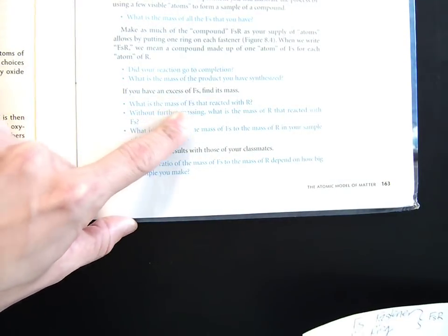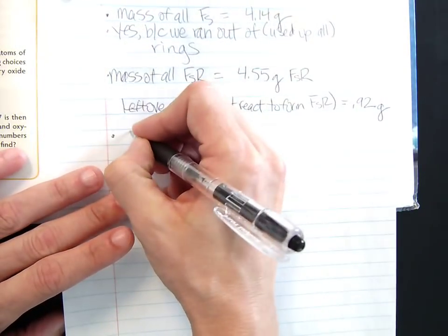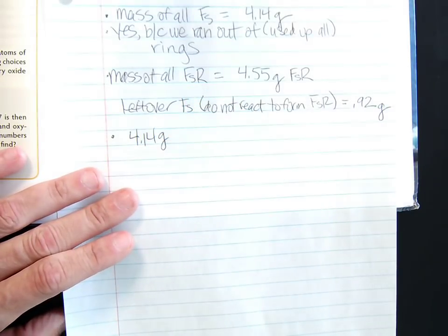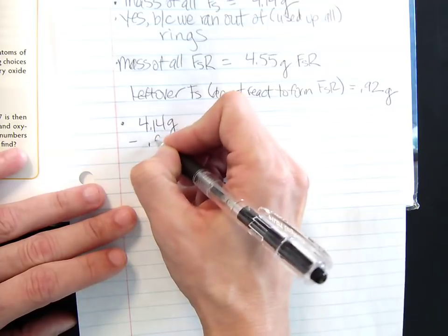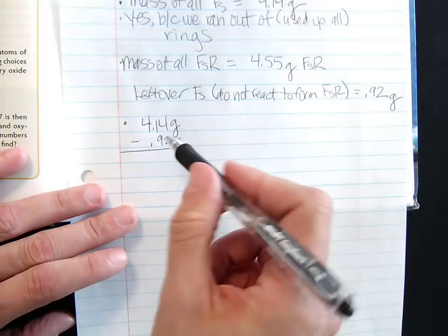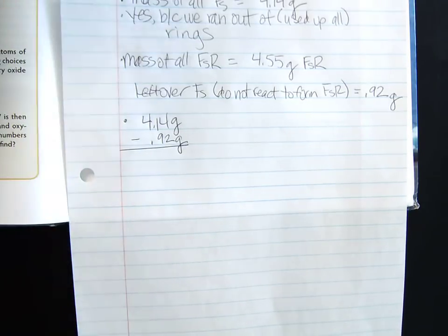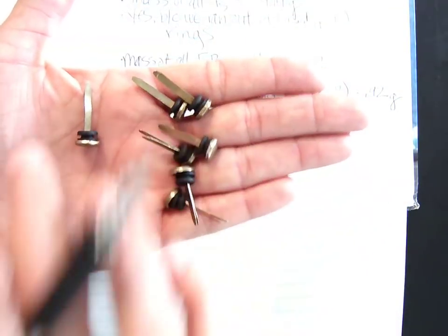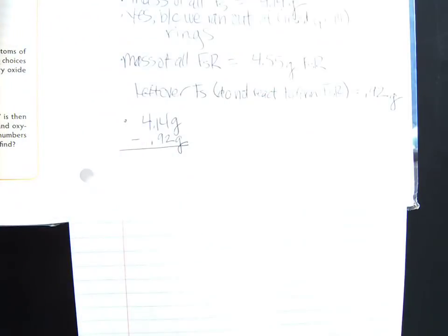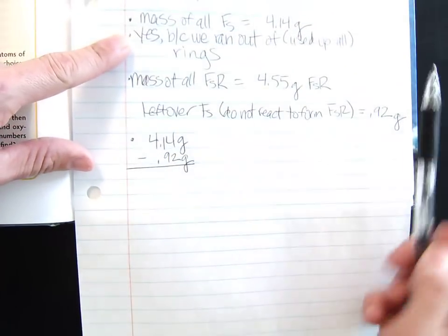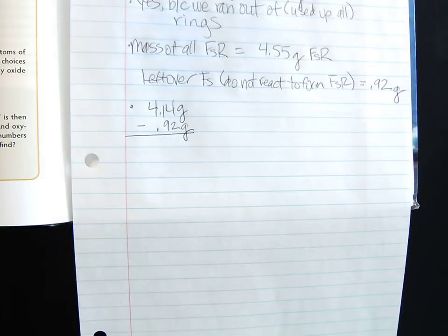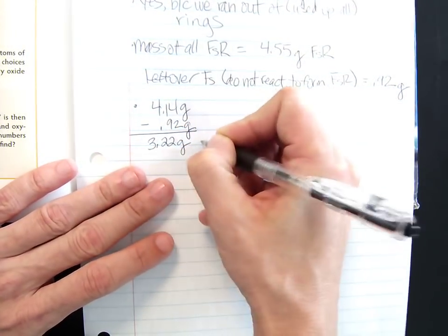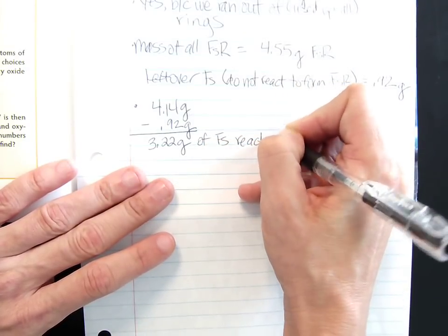The next blue dot says: what is the mass of fasteners that did react? I know I started with 4.14 grams of fasteners at the beginning. All but two of those fasteners reacted, and the mass of the two that did not react is 0.92 grams. If I subtract those, I figure out exactly the mass of fasteners that did react — the mass of those seven fasteners — without actually taking them apart and massing them. So 4.14 minus 0.92 gives us 3.22 grams of fasteners reacted. That's an important number.